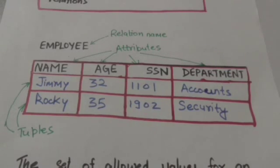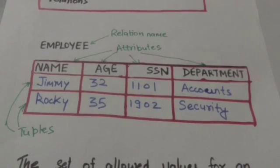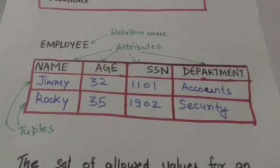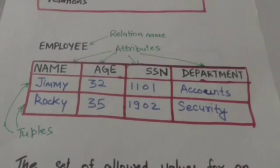For example, see this employee table. Each row of this table represents a fact about an employee entity. The column names—name, age, SSN, and department—specify how to interpret the data values in each row on the basis of which column each value is in.